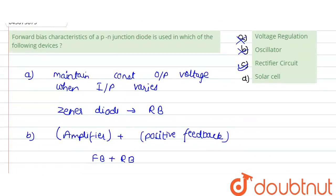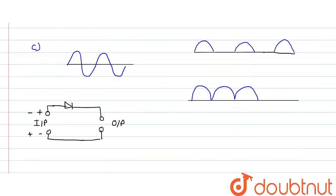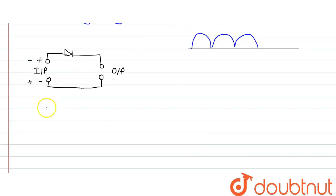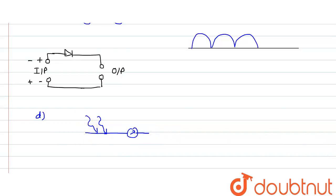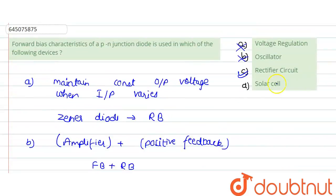In part D, the solar cell — there is no biasing used in the solar cell. The solar cell simply converts light energy from sunlight into electrical energy. No biasing is required, so option D is not our answer. Therefore, the correct option is only C.